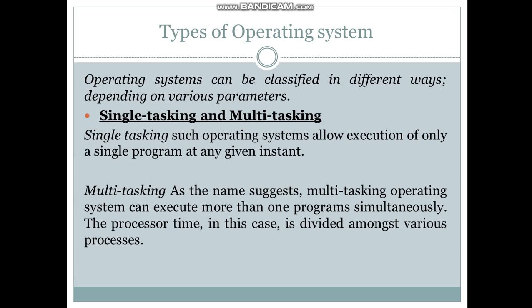The operating system can be classified depending on various parameters. The first parameter is the number of tasks that it can perform, so it can be a single-tasking or a multitasking operating system.